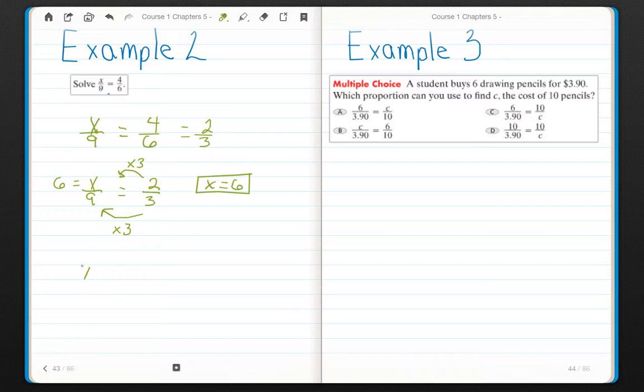The other option for this one is I can use cross products. X over 9 equals 4 over 6. Since I don't have any units here, I can't really use a unit rate, but I can use cross products. So 6X equals 36. Divide both sides by 6. X equals 6.